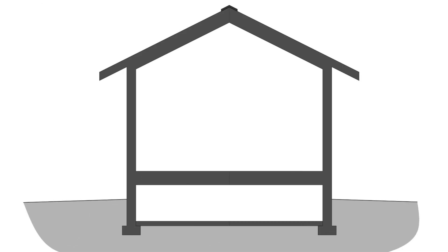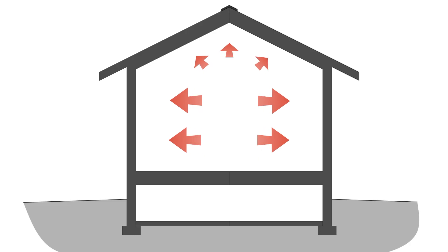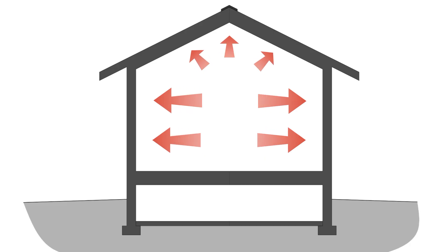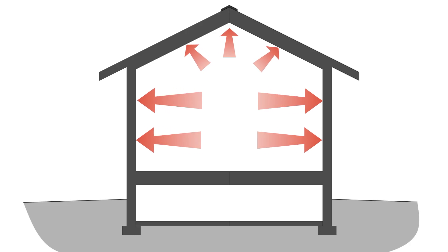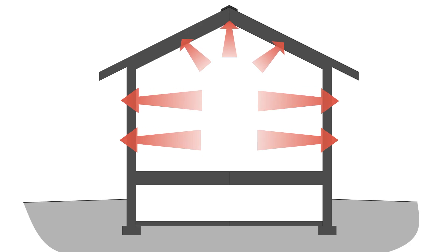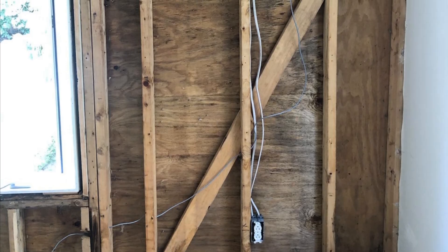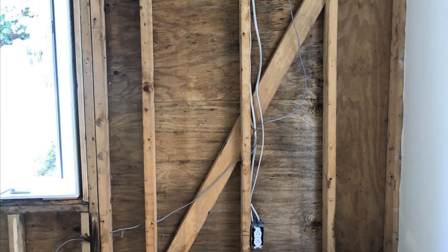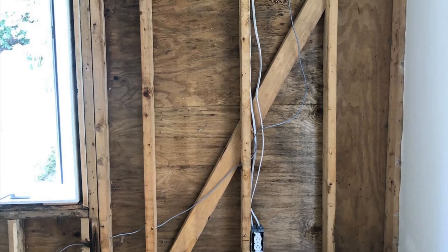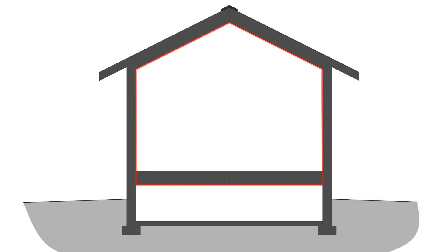On the other end of the spectrum, if it's really cold outside, warm, moisture-laden air from the interior that leaks into the wall assembly can deposit moisture on the backside of the sheathing, and that's often where we see sheathing rot in cold climates if that moisture can't dry out. And so it's important to have an air barrier on the interior in cold climates.